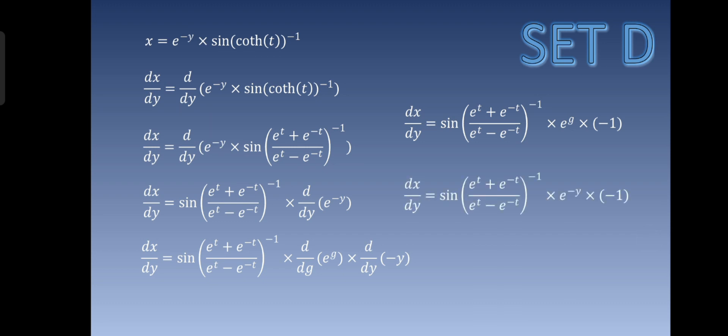Substituting back, where g equals negative y, the final answer is dx over dy is equal to negative 1, all over sine of e raised to 2t plus 1, all over e raised to 2t minus 1, times e raised to y. Thank you for watching.